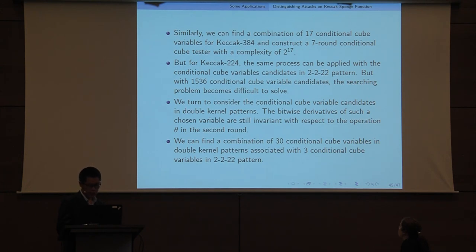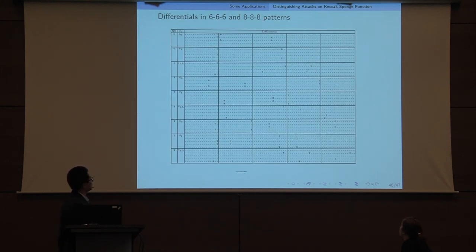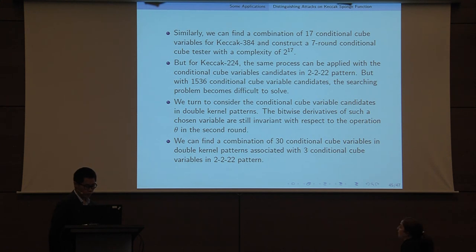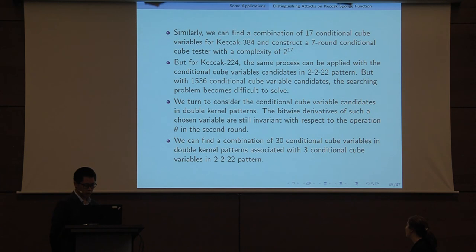That's the double kernel pattern. The bitwise derivative of such a chosen variable is still invariant with respect to the theta operation in the second step. The differentials are much sparser than the former ones. In this problem we have fewer candidates and fewer constraints to consider. We find a combination of 30 conditional cube variables in double kernel patterns associated with 3 conditional cube variables in the former pattern. So the distinguisher here has complexity 2 to the 33.